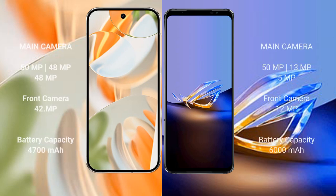The Google Pixel 9 Pro features a rear triple camera setup: 50MP plus 48MP plus 48MP, with a 42MP front camera. The Asus ROG Phone 6D Ultimate features a rear triple camera setup: 50MP plus 13MP plus 5MP, with a 12MP front camera.